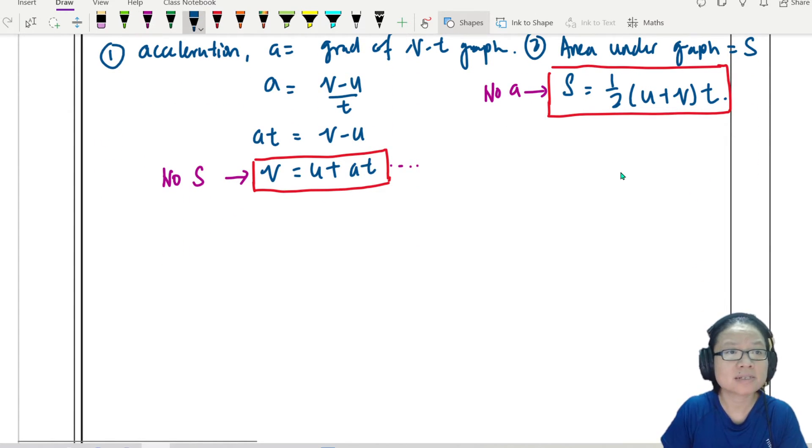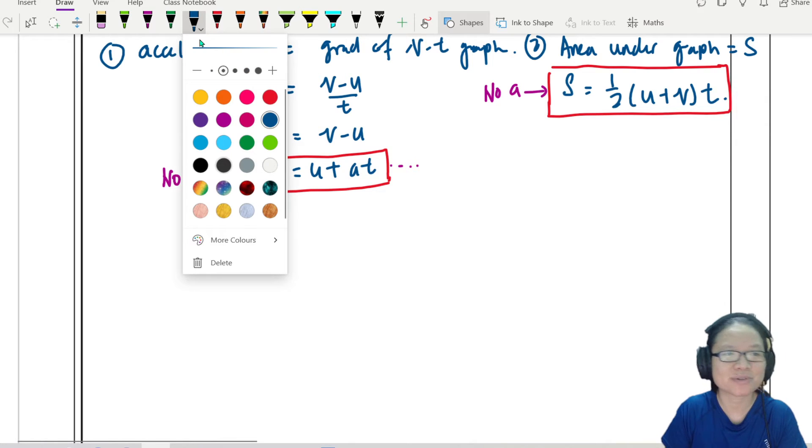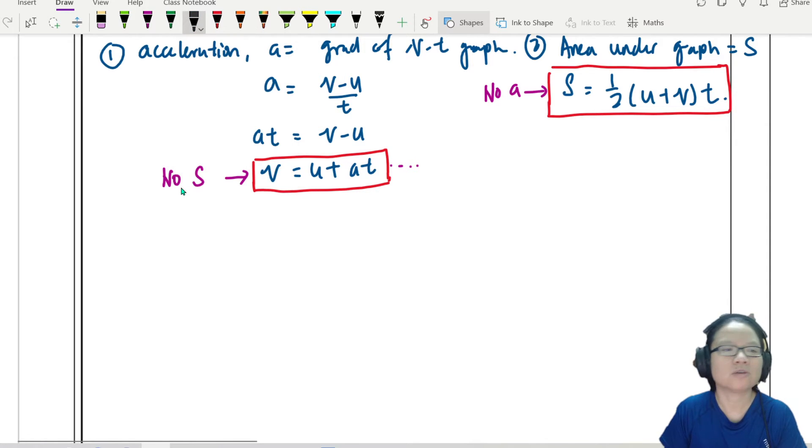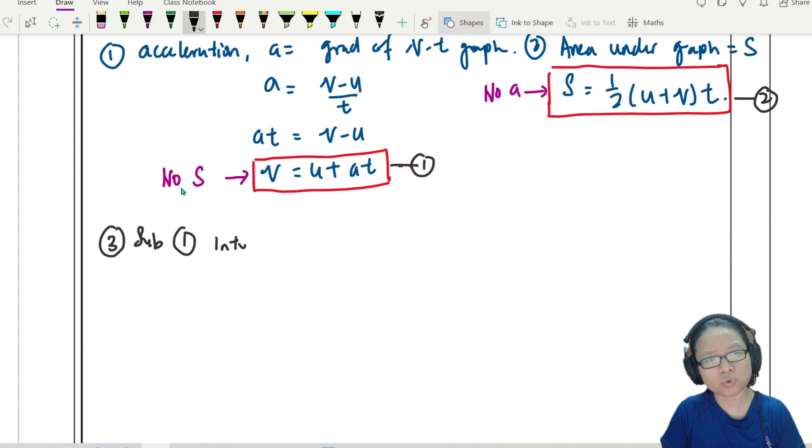So this all is done by simultaneous equation. So sometimes this will give students a scary shock. Physics is a simultaneous equation. You can do it. It's just maths. Tell yourself that. So number three, I am going to substitute equation. So I'm going to label this one is equation one. Now let this one be equation two. So I'm going to sub equation one into two. Let's see what happens.